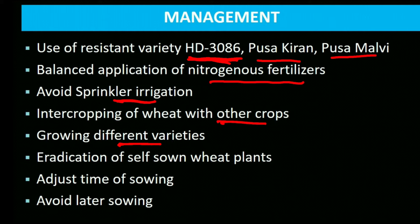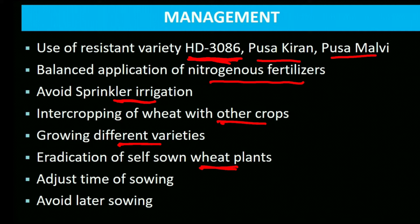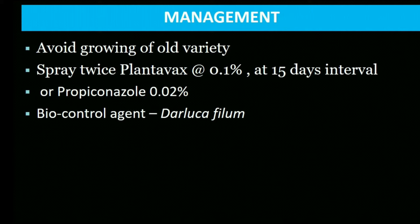Adjust time of sowing and avoid late sowing. Early sowing in October-November allows the plant to mature by March, before stem rust arrives in March-April, thus reducing loss. Any variety becomes susceptible within 3–5 years of release, so always grow the latest released variety rather than old ones.